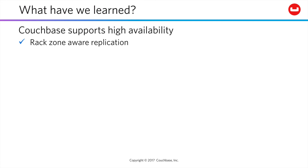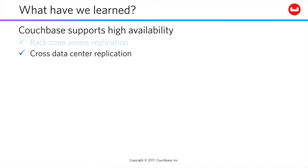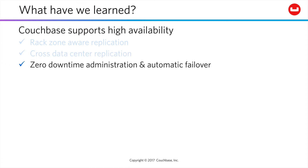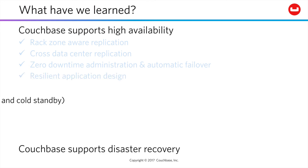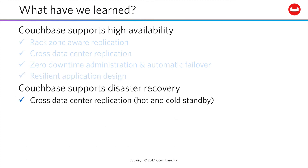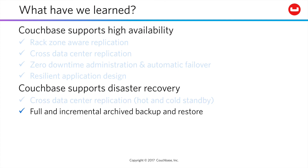Couchbase keeps your data available through rack-zone-aware replication and cross-data center replication. We provide zero downtime administration with optional automatic failover, and our SDKs support resilient application design patterns. We also give you the tools you need in case of disaster, with XDCR to maintain either hot or cold standby data centers, and full or incremental archived backup and restore capabilities for when Godzilla and company strike.